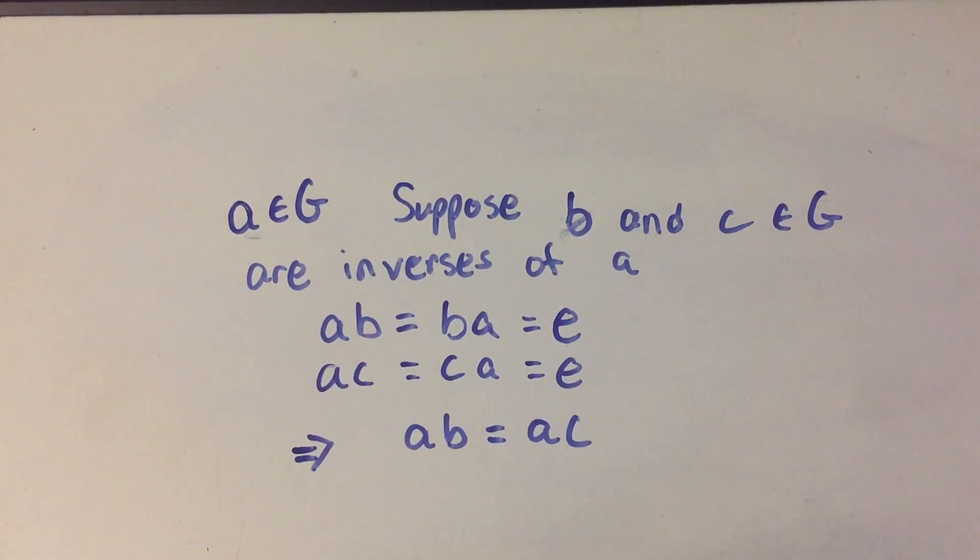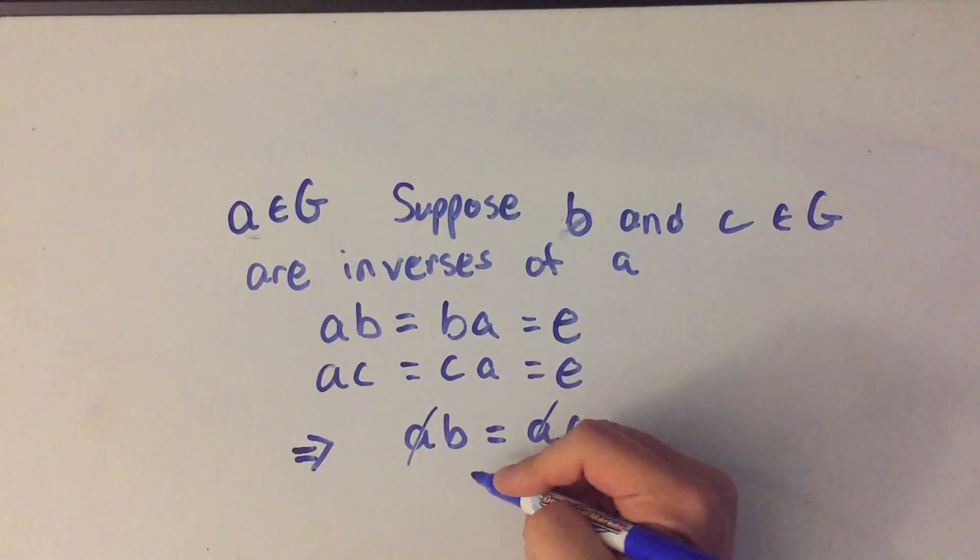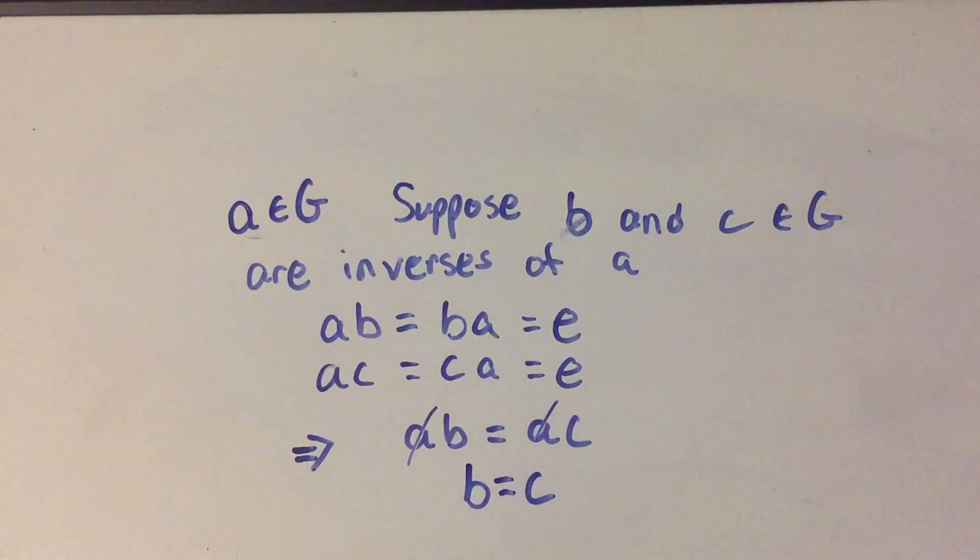And if you watched my previous video, or if you know the fact that if you're in any group, the left and right hand cancellation laws hold, we simply just cancel the A on both sides. The left hand cancellation law works, and I get that B is equal to C.